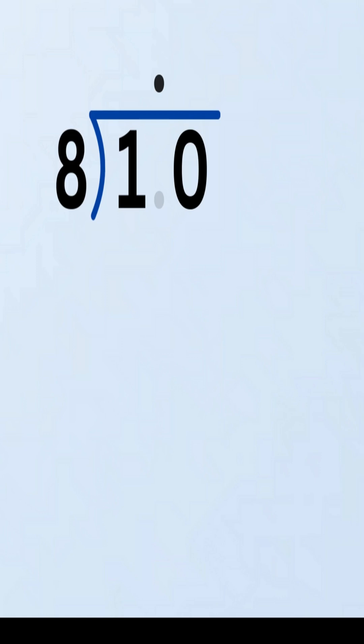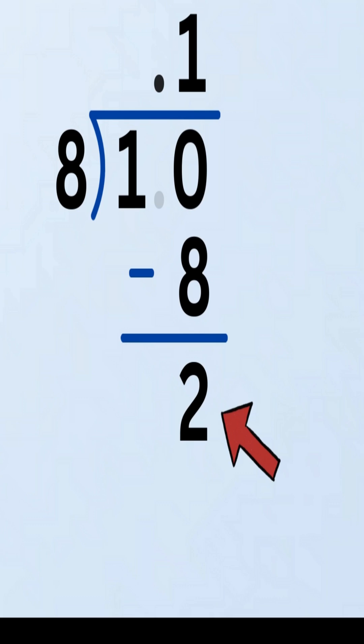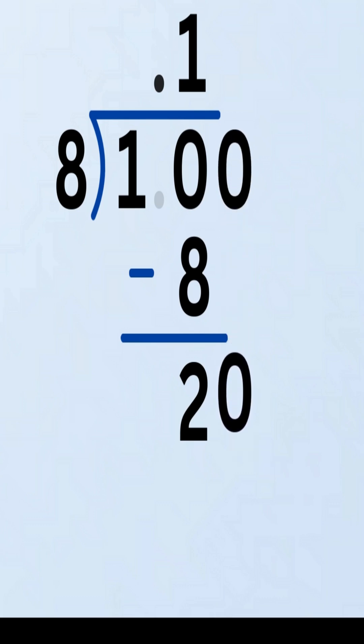Just to make sure you don't forget at the end — did you get that? So now, instead of asking how many times 8 goes into 1, we ask: how many times does 8 go into 10? The answer is 1 time. We write 1 in the quotient right after the decimal point. Next, multiply: 8 times 1 equals 8. Now subtract: 10 minus 8 equals 2. We still have a remainder of 2 — not done yet. To continue, we bring down another 0 from the dividend, placing it next to the 2, making the new number 20.